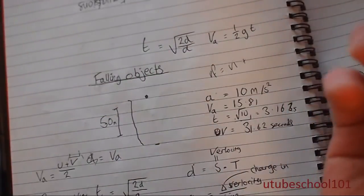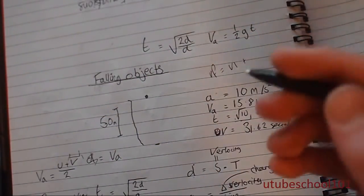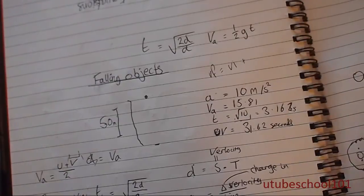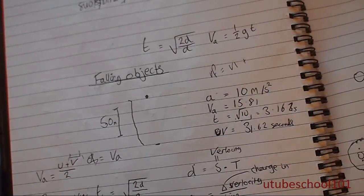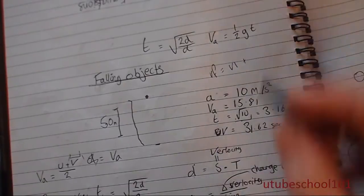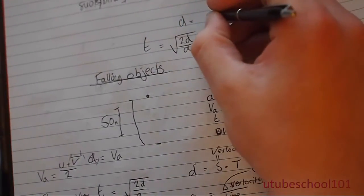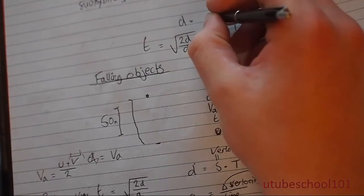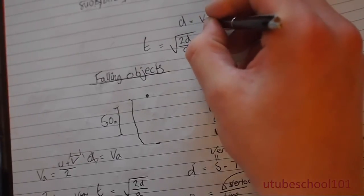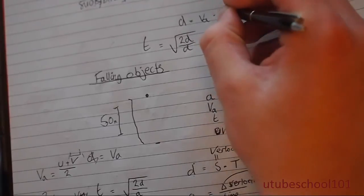And the average velocity you can work out for yourself. It's just the same as finding the mean. Just add them up and divide by 2. Also, this is very useful to remember: distance equals velocity, average velocity, times by time.